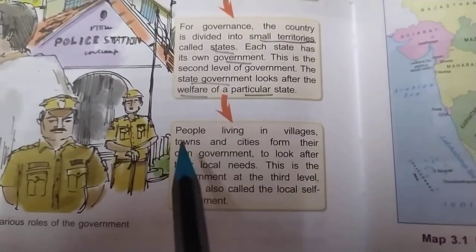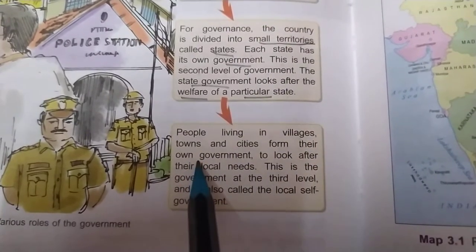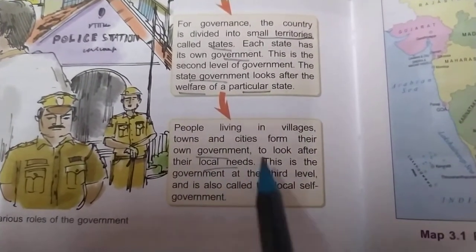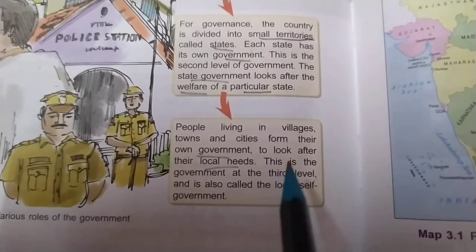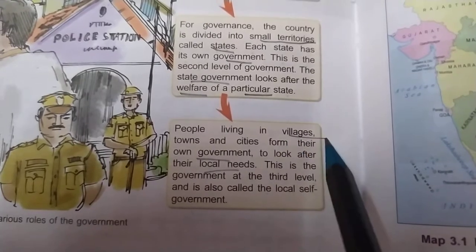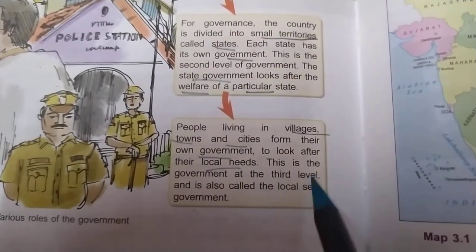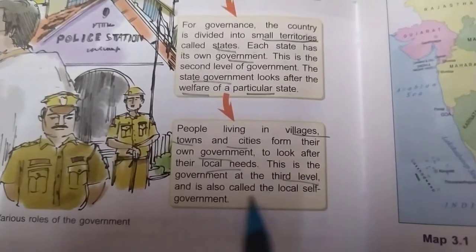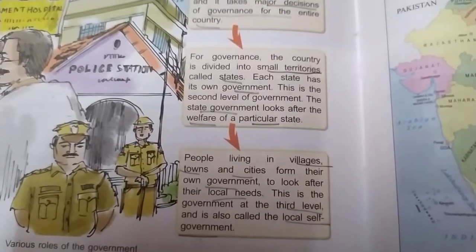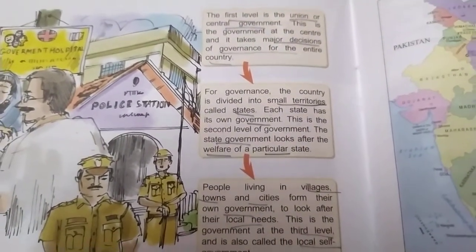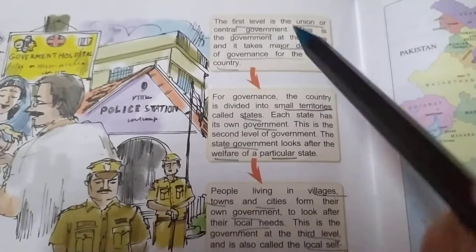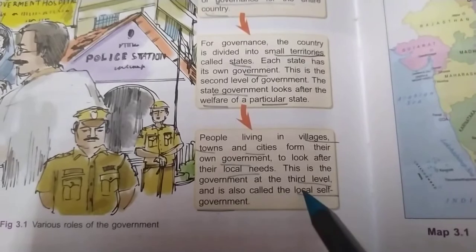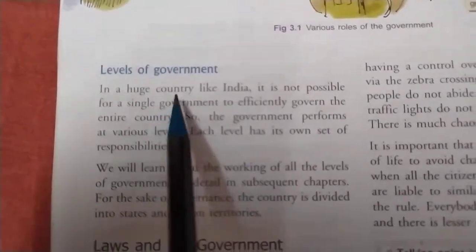People living in villages, towns, and cities form their own government to look after their local needs. This is the government at the third level and is also called the Local Self-Government. So India is divided into three parts and thus we have the three-tier system of government: first is the Union or Central Government, second is the State Government, and the third is Local Self-Government.